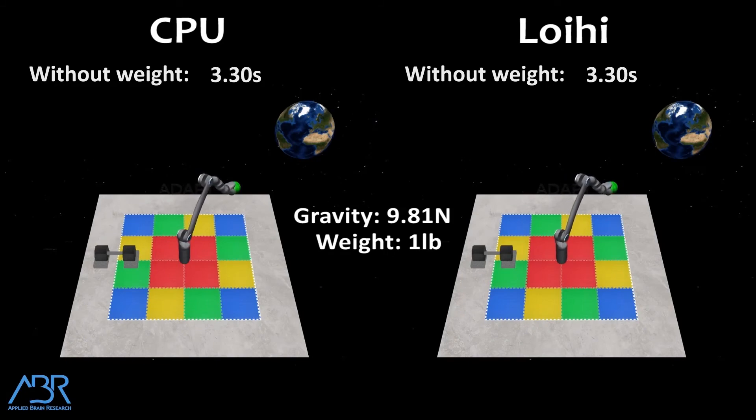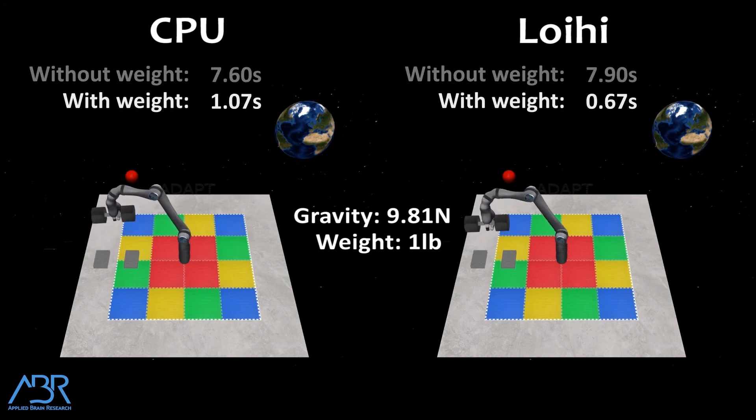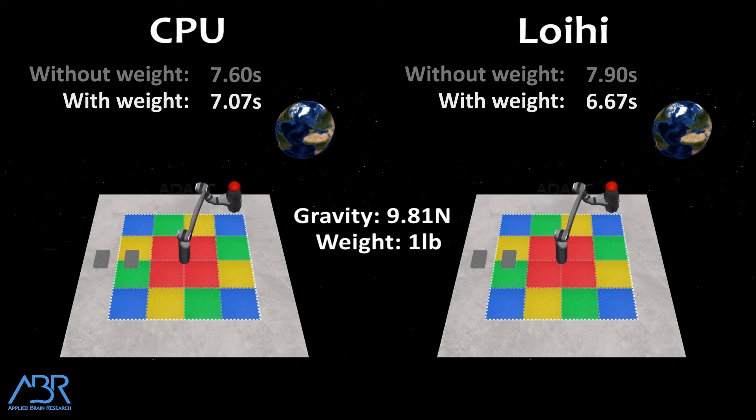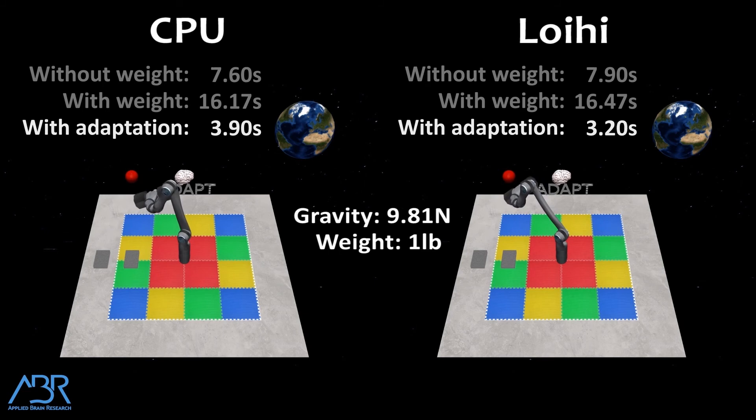This video is from some past work that we did with Intel creating an interactive conference demonstration showing the adaptive controller. It highlights both how the adaptive controller improves performance and the difference that a neuromorphic implementation makes. First, the arm reaches to four different targets in its workspace. And an important detail here is that this is a force control system, meaning that torques are being sent to the arm. This requires a very precise model of the dynamics, so when the arm picks up a weight and tries to reach to all the targets again, we can see that it doesn't do nearly as well because its model of the arm dynamics doesn't account for this unexpected weight.